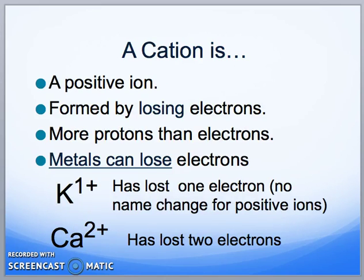On the flip side, we have cations, which are the opposite of that. They have positive charges, formed because they lose electrons. There are more protons than electrons, which is why we have that positive charge. Cations are a majority metals.